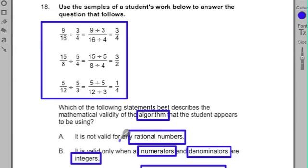It says, it's not valid for any rational numbers. B, it's valid only when all numerators and denominators are integers. C, it's valid only when all the numerators and denominators are positive integers. Or D, it's valid for all rational numbers.